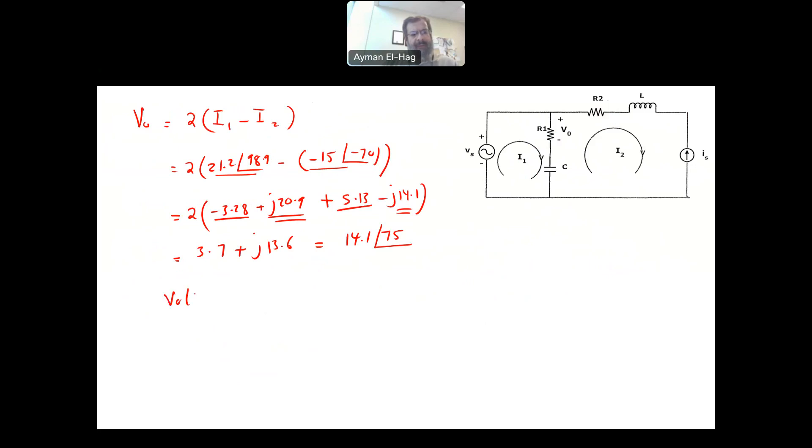Now V0 of T will equal the magnitude 14.1 cosine, because that is my reference, the same frequency 5T plus the phase shift which is 75 degrees. So that is basically your V0 of T. Now for that specific question, we can find V0 of T right away in a very simple step.